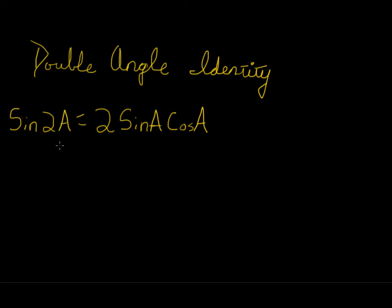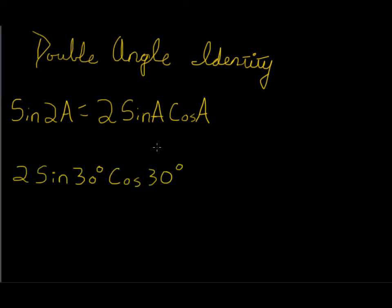Let's take a look at some problems and get started. Here I have posted our first example: 2 sine 30 degrees multiplied by cosine 30 degrees.